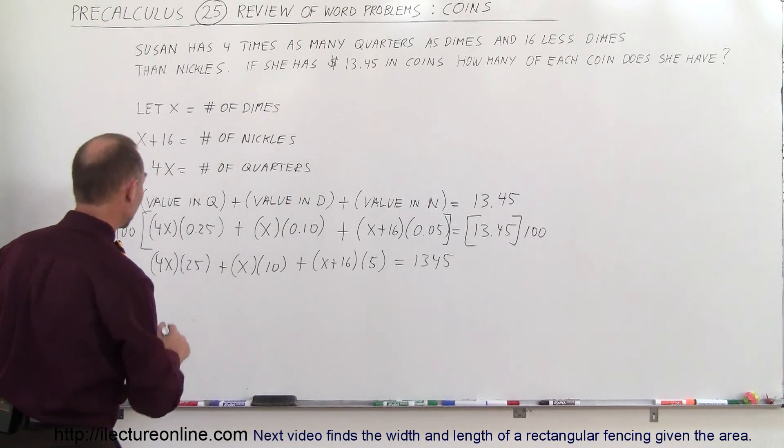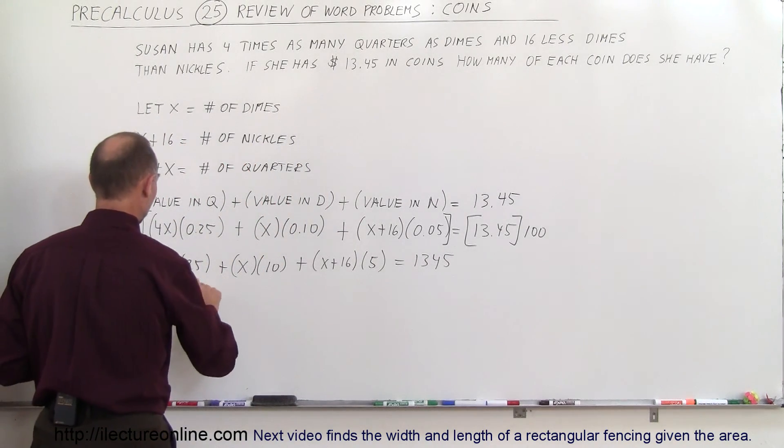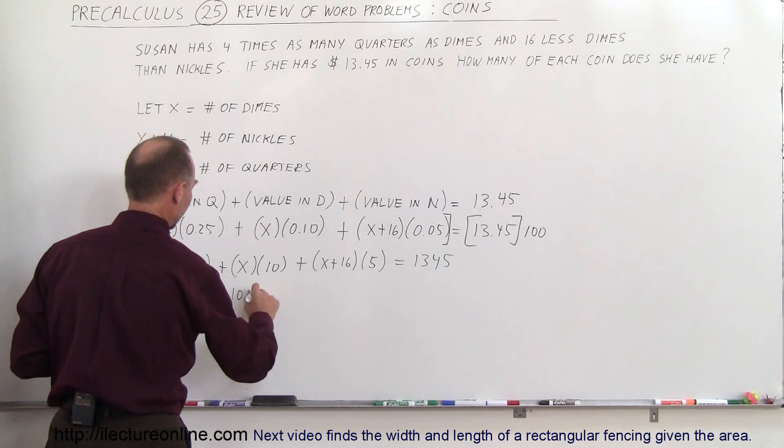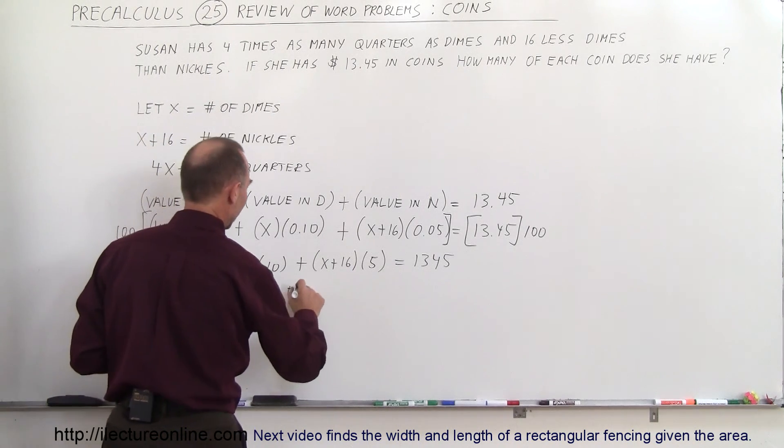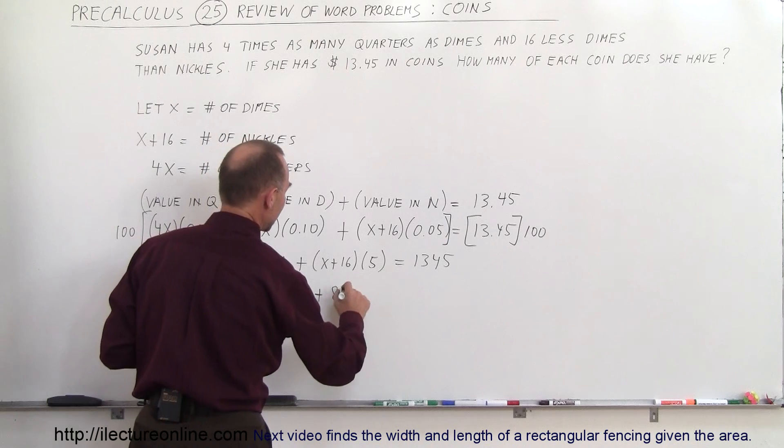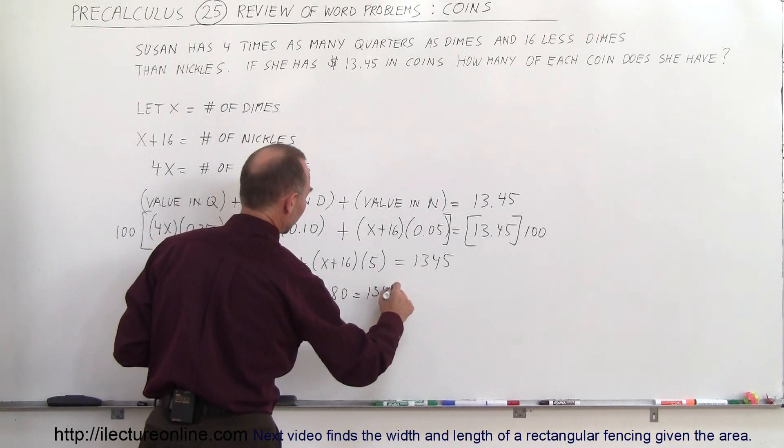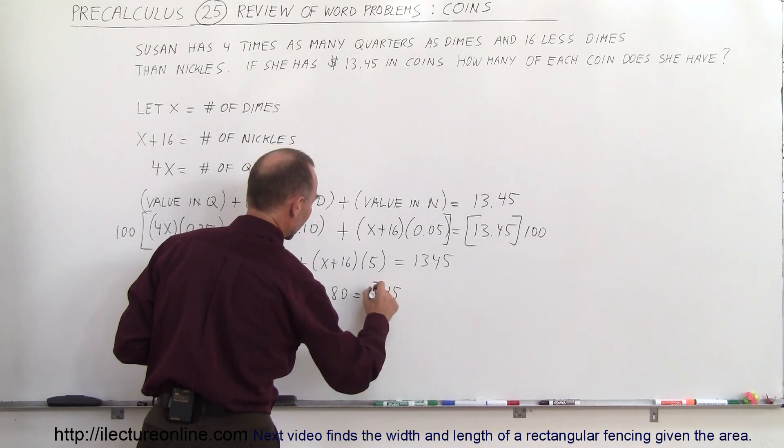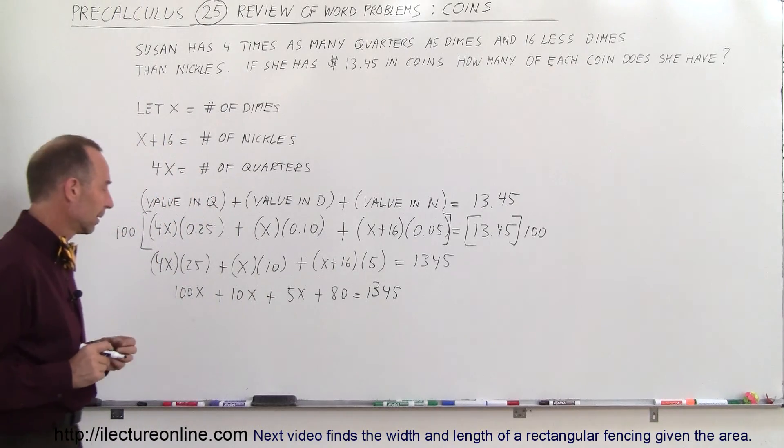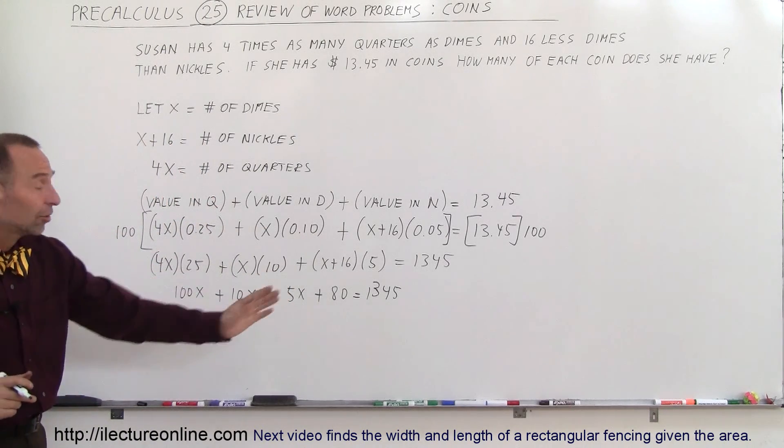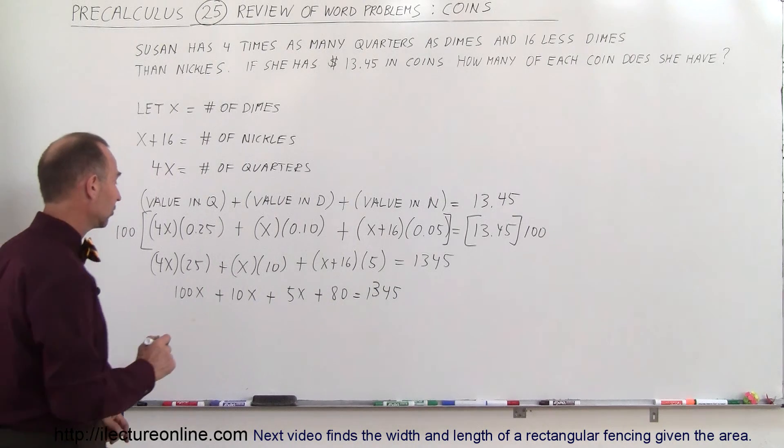Now we get rid of the parentheses. So it gives us 100X plus 10X plus 5X plus 80 equals 1,345. Now we want to move the 80 to the other side. Subtract from 1,345 and add up all the Xs.